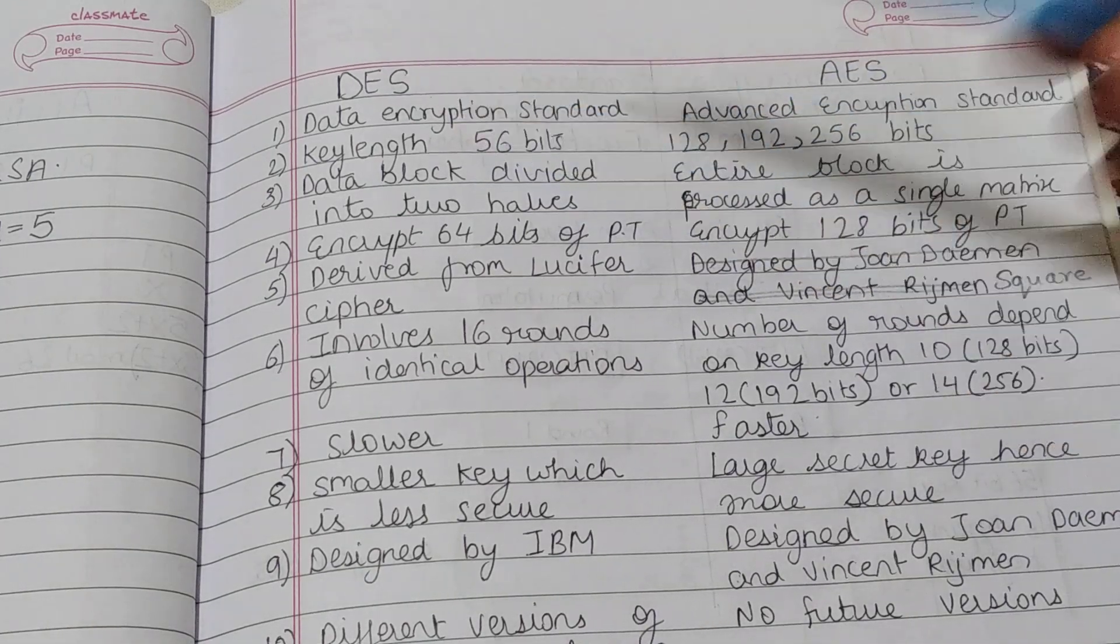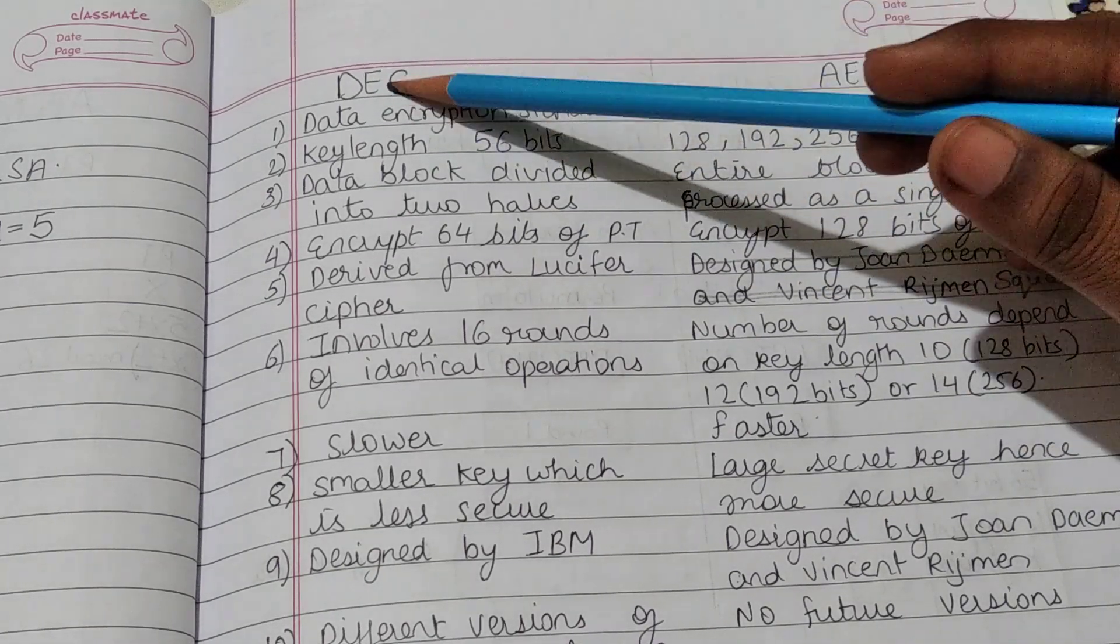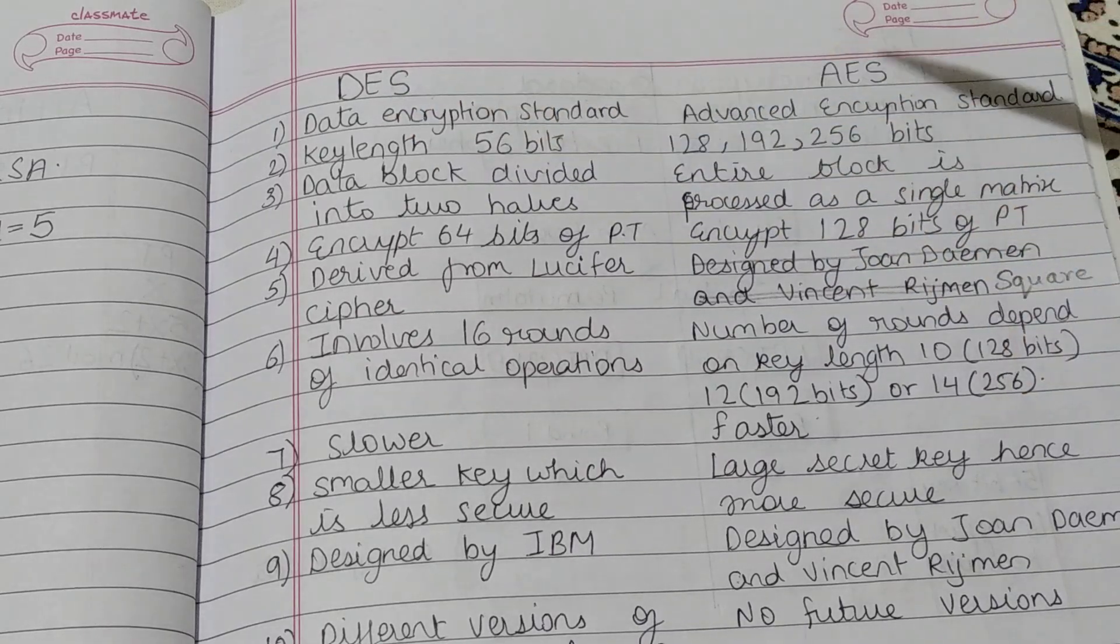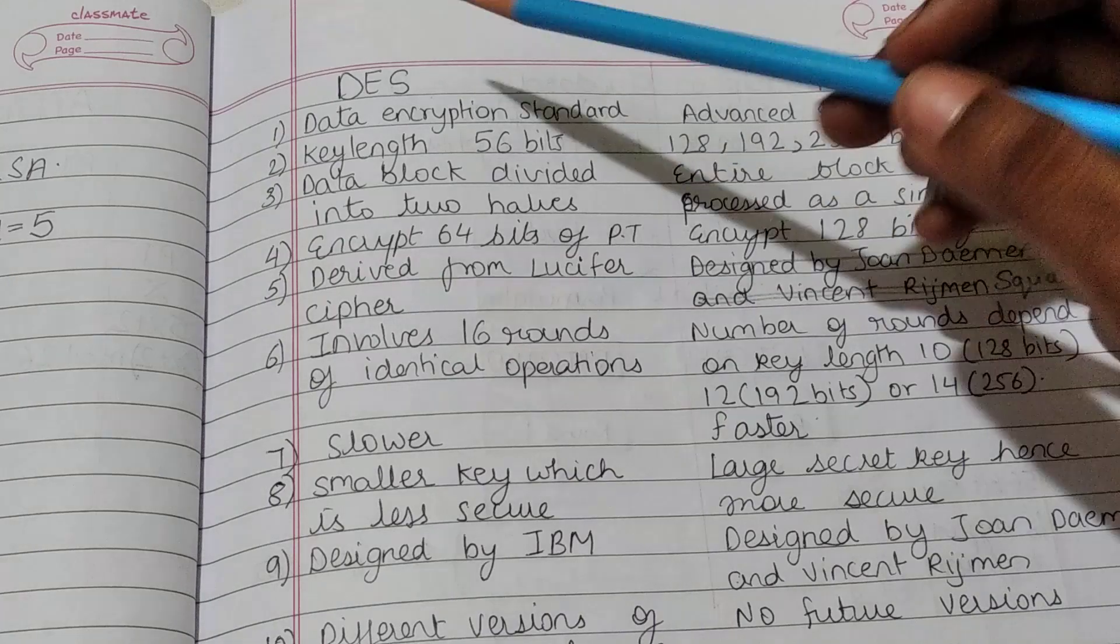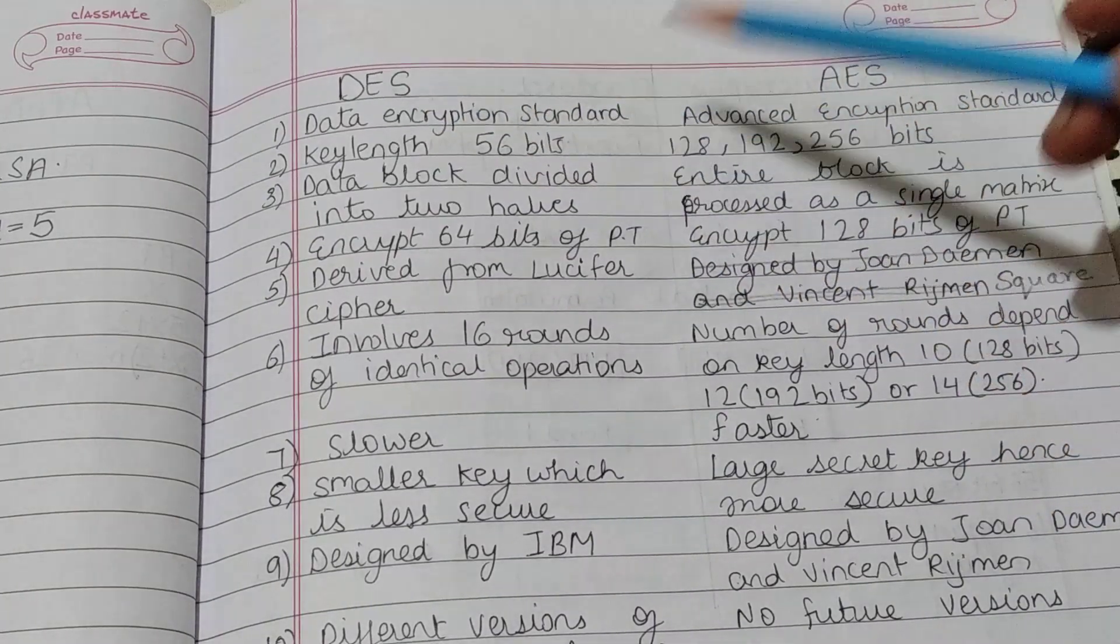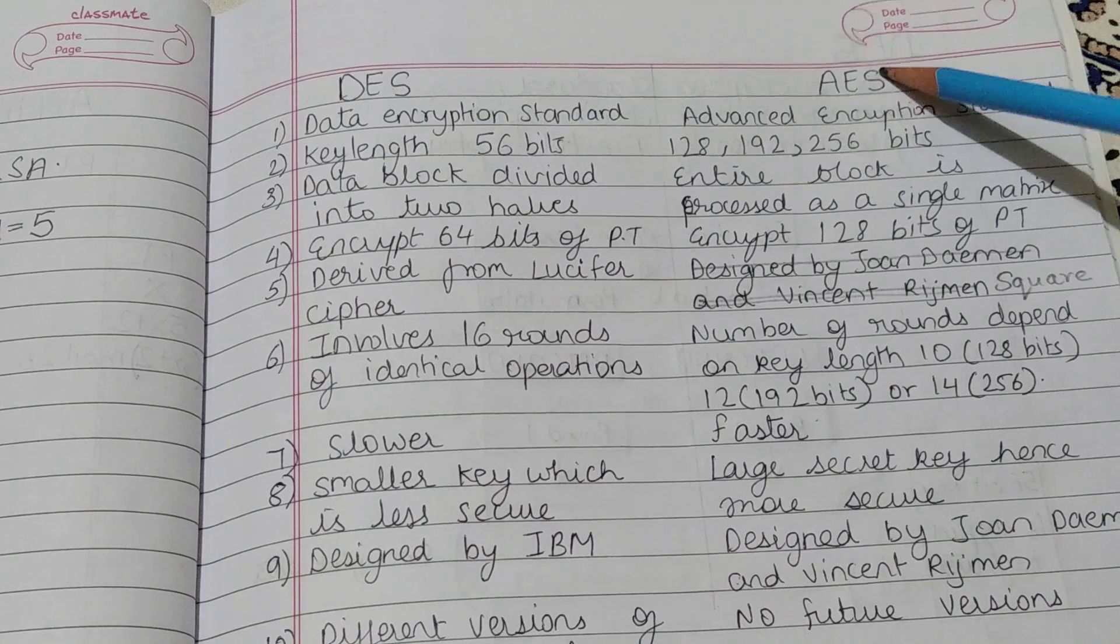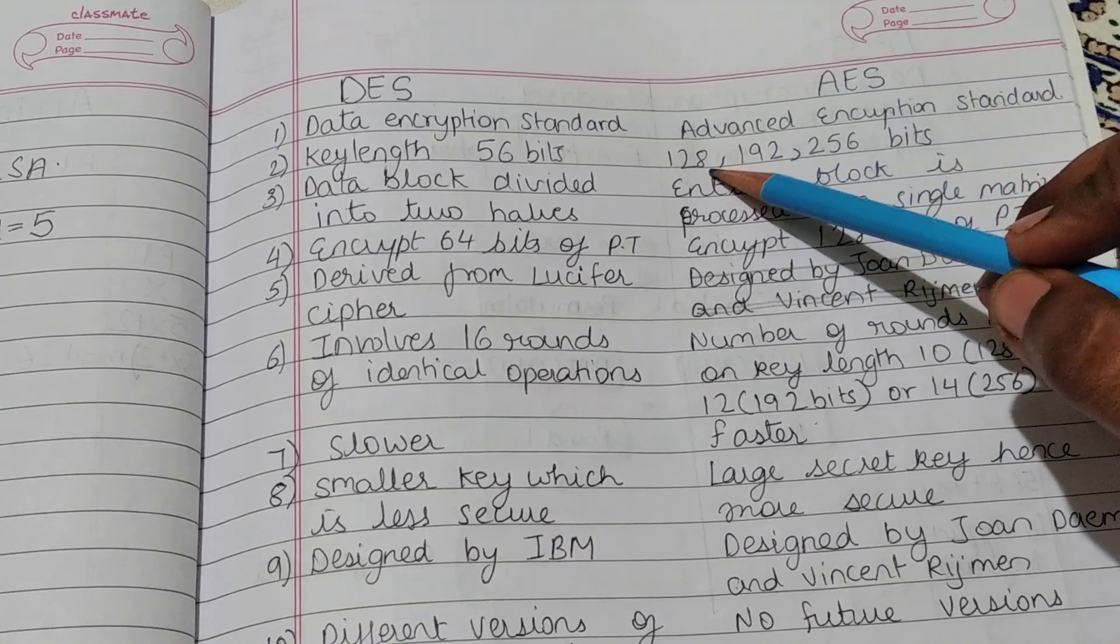Differences between DES and AES. DES stands for Data Encryption Standard, AES stands for Advanced Encryption Standard. In DES the key length is 56 bit, but for AES it can have 128 bits, 192 bits or 256 bits.